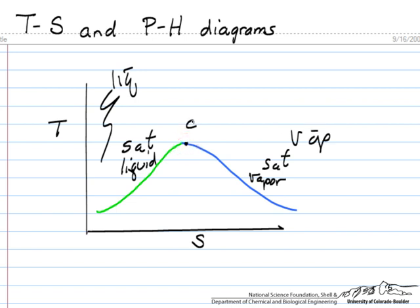So one of the advantages of this particular diagram is looking at, for example, an adiabatic reversible process from here to here. So this might be start point one, point two.